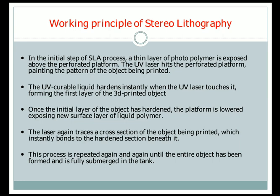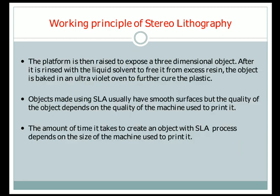Once the full 3D model is manufactured and completely submerged in the liquid polymer tank, the platform is raised to expose the 3D object. It is then rinsed with a liquid solvent to remove excess resin, and the object is baked in an ultraviolet oven to further cure the plastic.